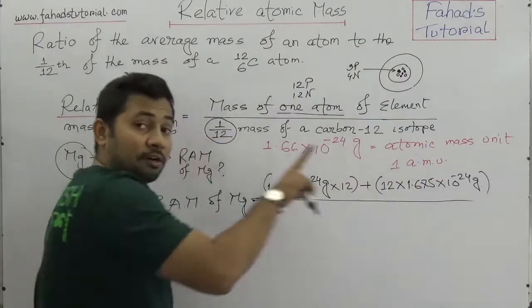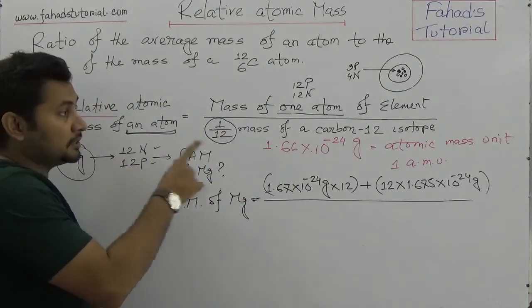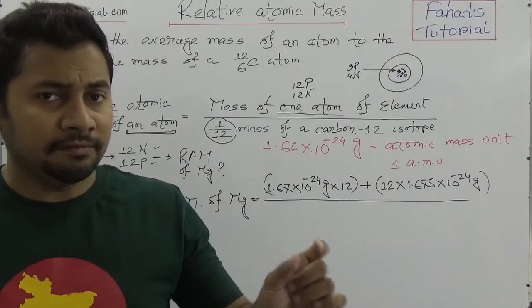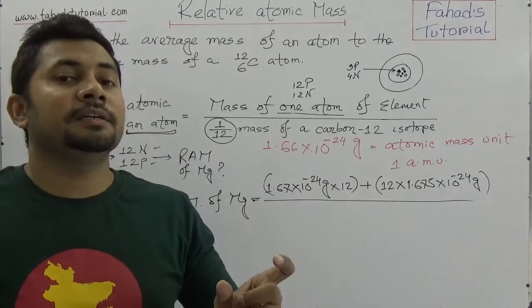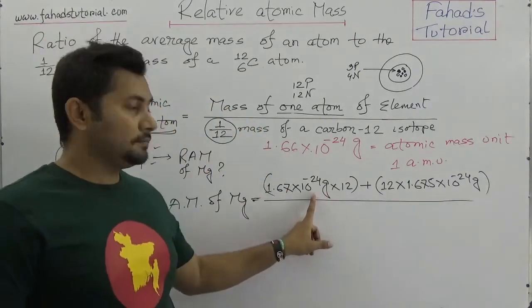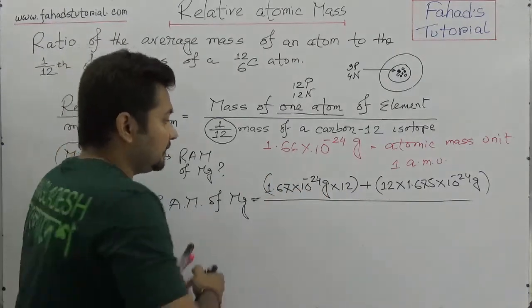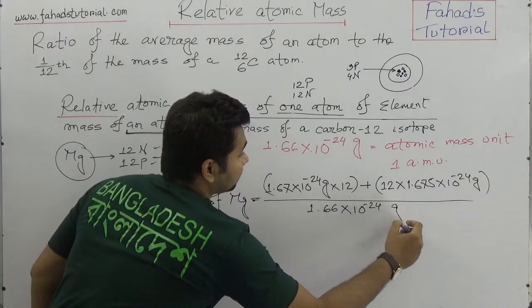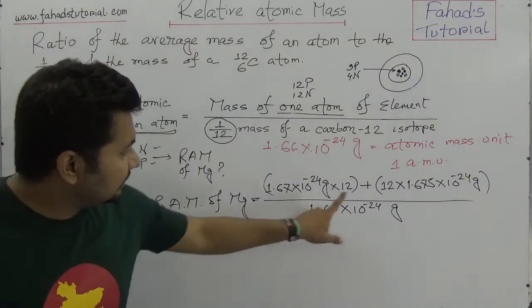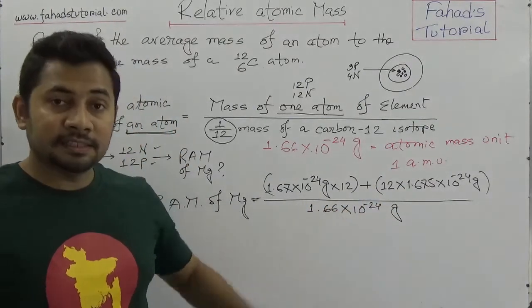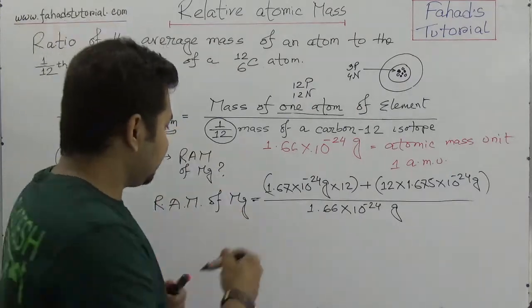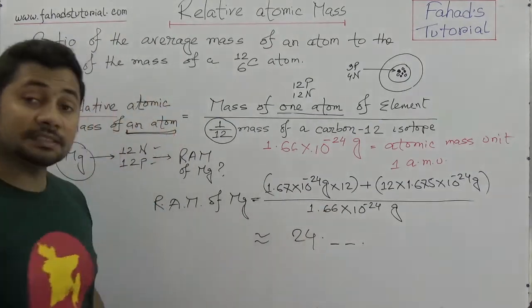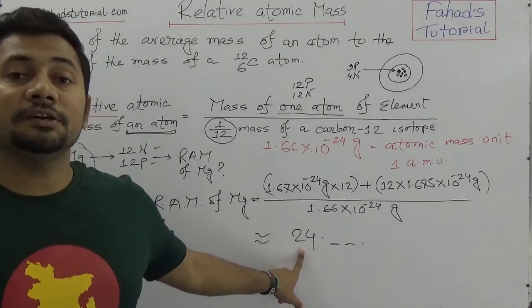So if the number of neutrons and protons are given, we can also find out the mass of that atom. We add these and divide by 1.66 × 10⁻²⁴ grams. If we add them and divide by this value, we have a value of nearly 24 — so approximately 24-something. So this is the relative atomic mass of magnesium.